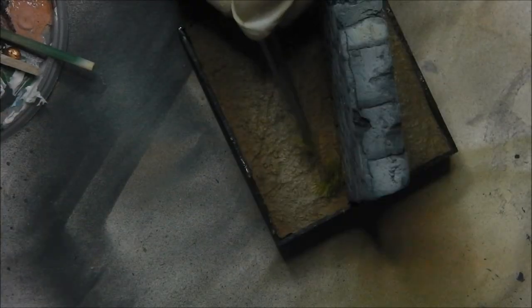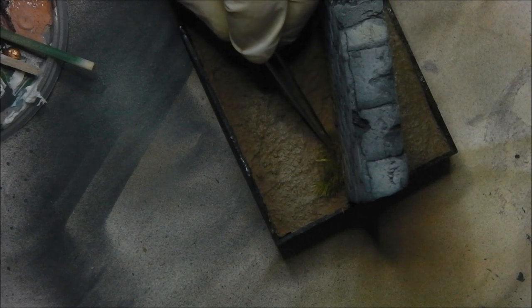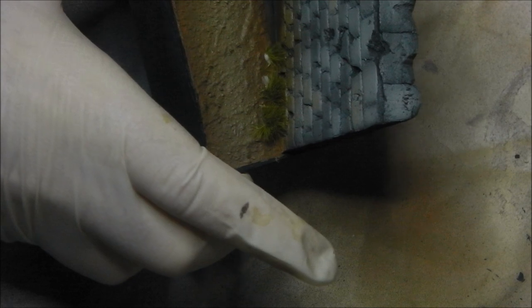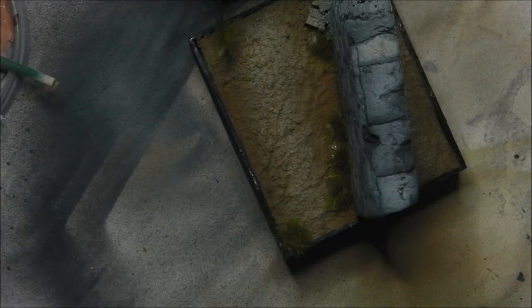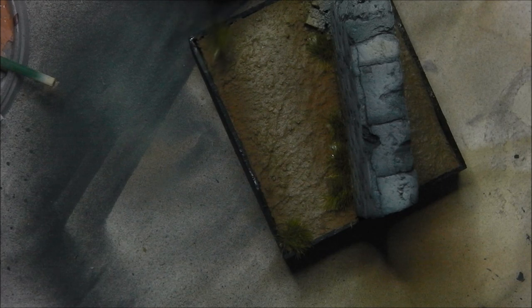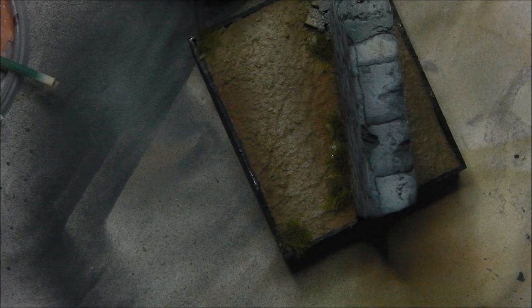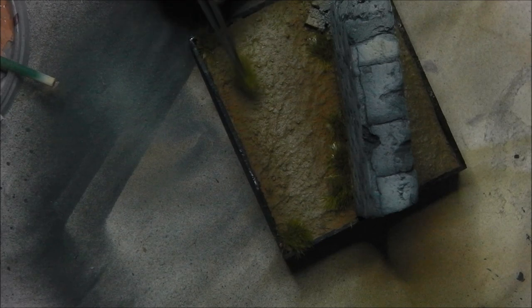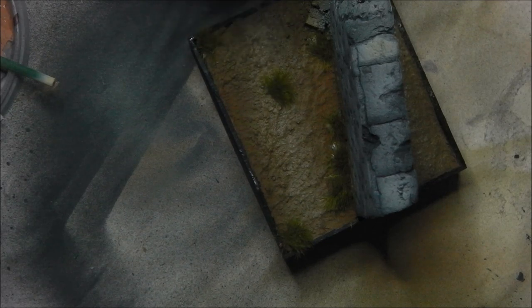Now I'm going to start adding our static grass and grass tufts. I'm going to begin with the grass tufts which happen to be from Warlord Games and these are their summer tufts. I'm just going to apply these piece by bit and slowly build it up and this is going to go on before I start laying the static grass.